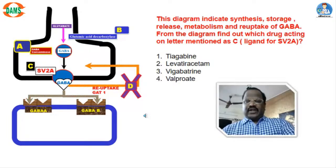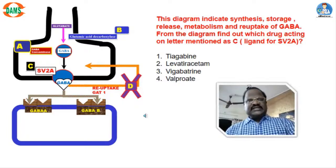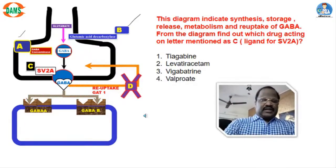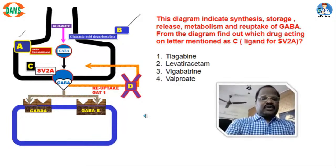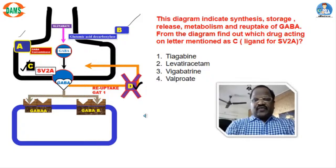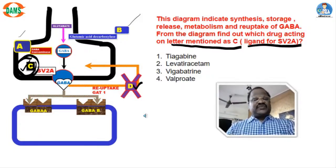From the diagram, find out which drug is acting on the letter mentioned as C. That is, which drug is acting as a ligand for SV2A? This picture shows synthesis, storage, release, metabolism and reuptake of GABA. I put A, B, C and various letters. What they are asking is which drug among the given four options is acting on the letter mentioned as C, meaning which drug is acting as a ligand for SV2A.